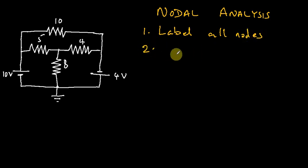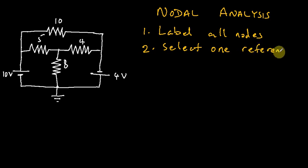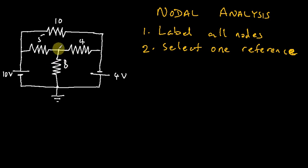After labeling all nodes, we select one of the nodes as a reference. Everything we do will be with reference to that particular node. Notice that we talk about potential difference and not just voltages. If the voltage at a node is 100V, we cannot tell what current will flow unless we know the voltage at the other node. Once we know both, we can find the potential difference across the resistor, and dividing by resistance gives us the current.